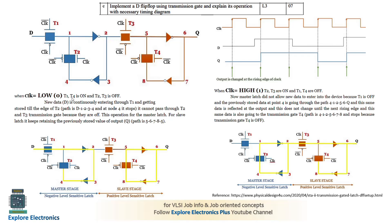When clock is low, transmission gates T1 and T4 are on. T1 passes D through the inverter, which inverts it, and another inverter restores it to the true value of D. T2 is off at this stage, so the value is held in the first latch. When the next positive edge arrives (clock goes high), T2 and T3 turn on.